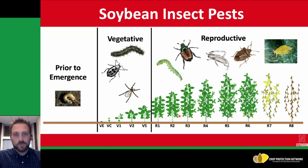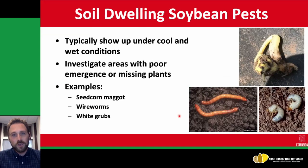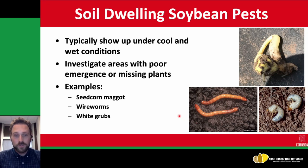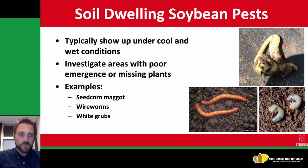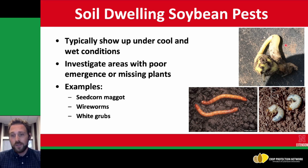To start off with the prior to emergence and below ground insects — these are soil dwelling soybean pests. You can see three of them in this image. They're most often going to show up under cool and wet conditions. So if you're scouting a field and seeing some poor emergence or missing plants, it's probably one of these three culprits. The first one is seed corn maggot. In most areas and most states each year, if we have cool and wet conditions, this insect will show up, typically whenever we have some green manure in a cover crop or manure applications that have been incorporated via tillage.